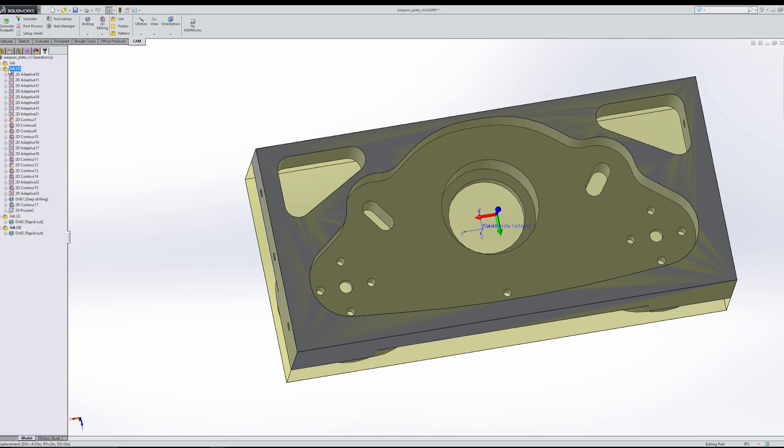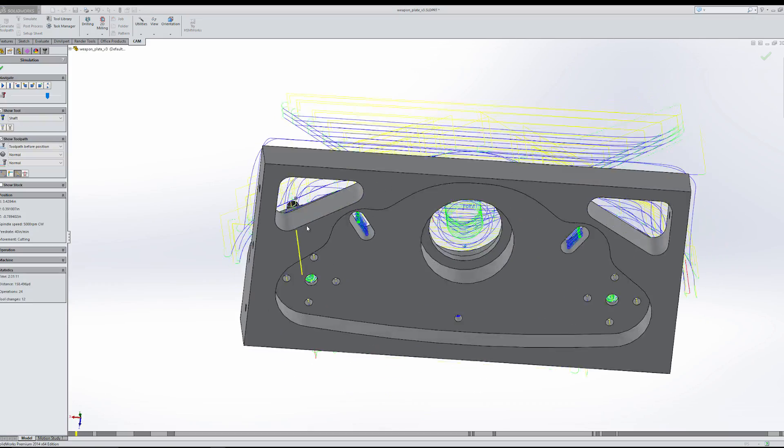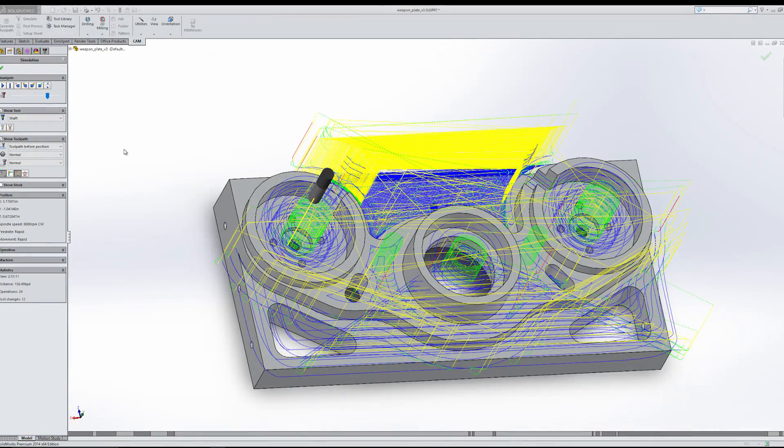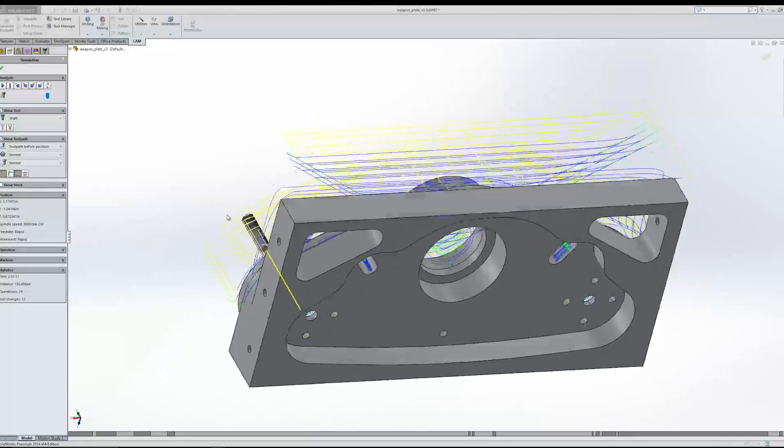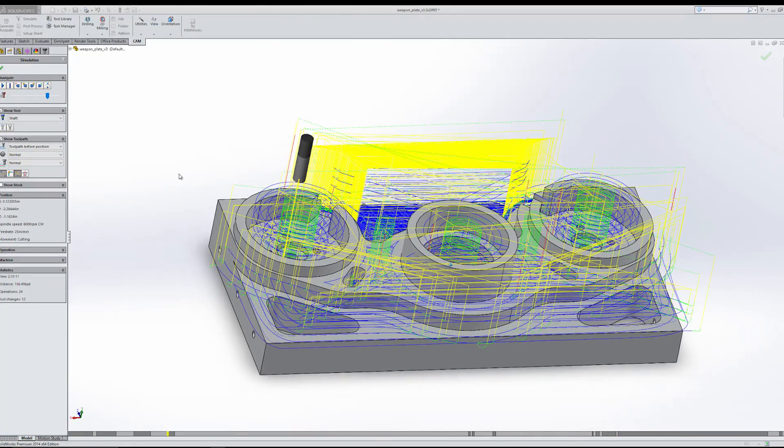And then if we do the second job, you can see that I'm doing all the operations on the top. So, pretty simple. Basically, the bottom, flip it over, and then do the top.